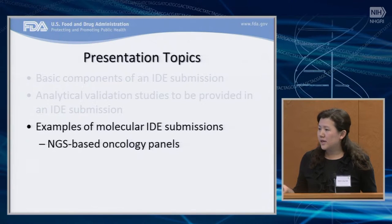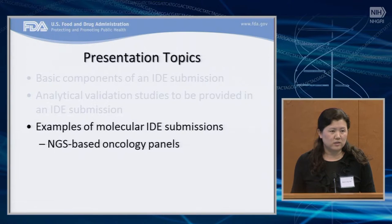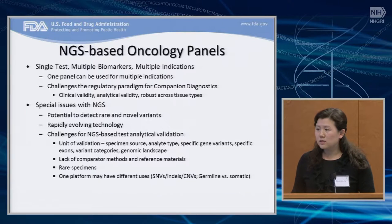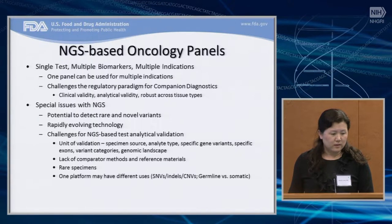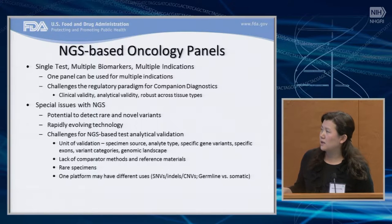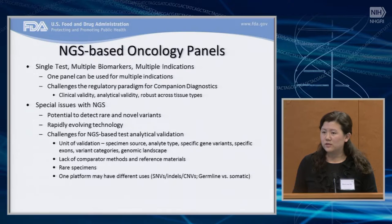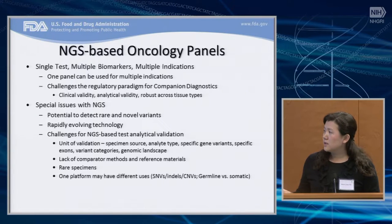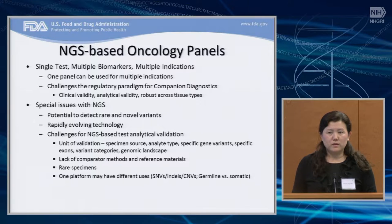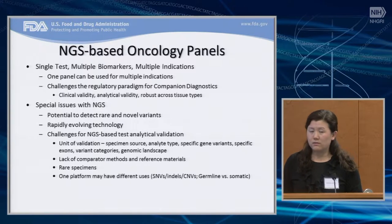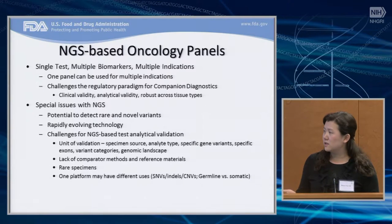I'm going to use an NGS-based ONCO panel as an example to show what analytical studies we ask for. The NGS-based ONCO panel is a single test that can detect multiple biomarkers, and sometimes it can be used for multiple indications. This creates challenges for the traditional regulatory paradigm in terms of clinical validity, analytical validity, and robustness across different tissue types. For the next-generation sequencing technology itself, it has unique challenges, such as the potential to detect novel and rare variants. The technology is evolving rapidly — there will be new aligners, new algorithms, and new chemistry coming out.